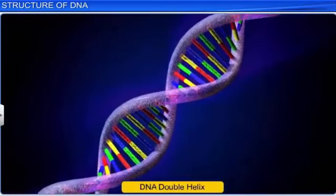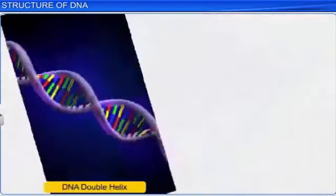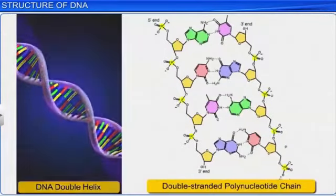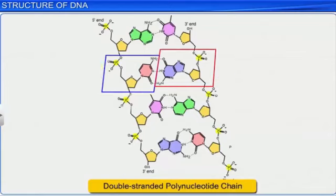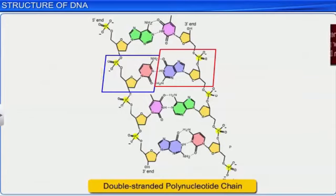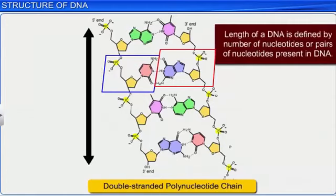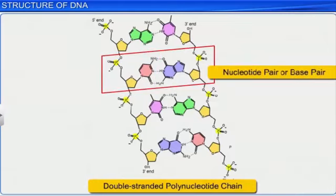DNA derives its name from deoxyribonucleic acid, a type of nucleic acid. Nucleic acids are made up of polynucleotide chains, which are formed by several nucleotides or molecules that make up the structure of the DNA when bonded together. The length of a DNA is defined by the number of nucleotides or pairs of nucleotides present in the DNA. A pair of nucleotides is also known as a base pair.